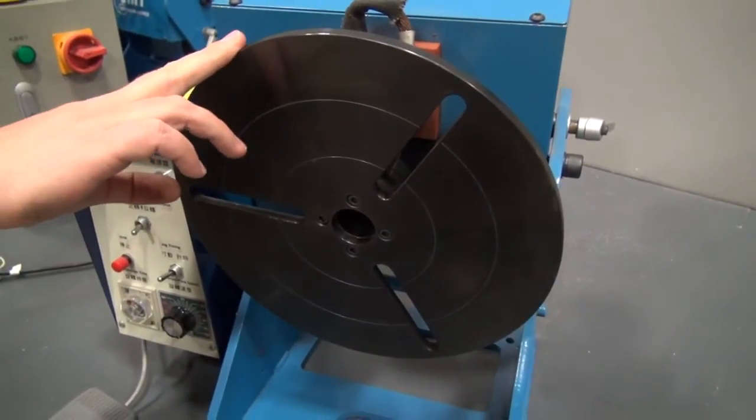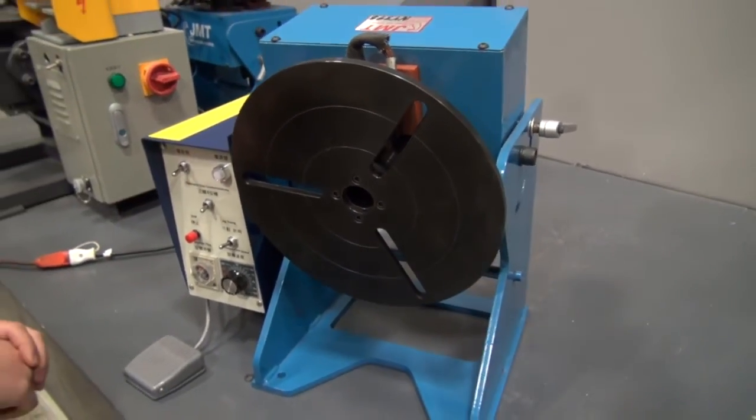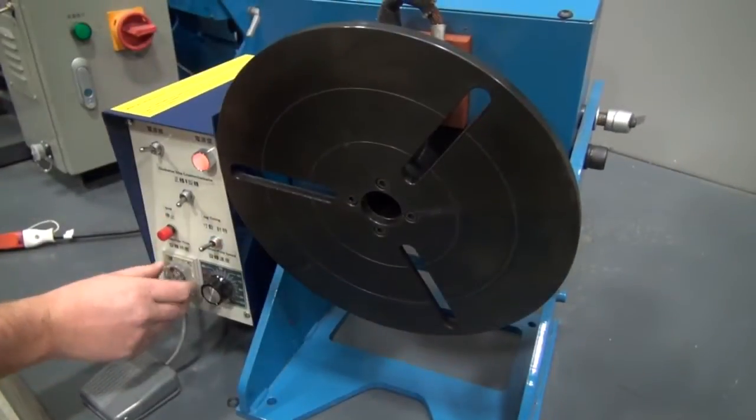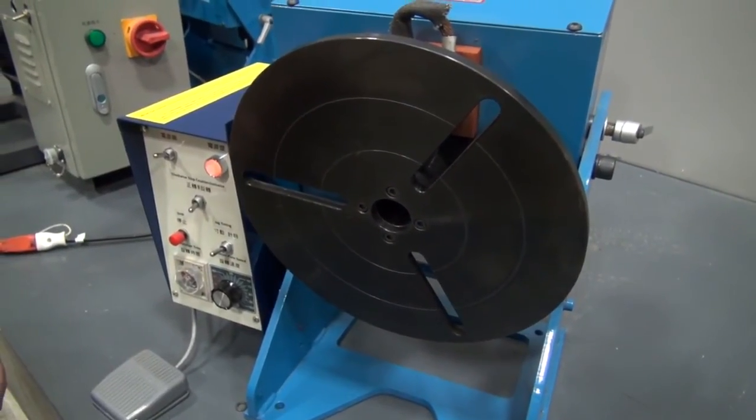This little weld positioner does 330 pounds capacity. Slick little machine, be happy to sell you one. Come on.